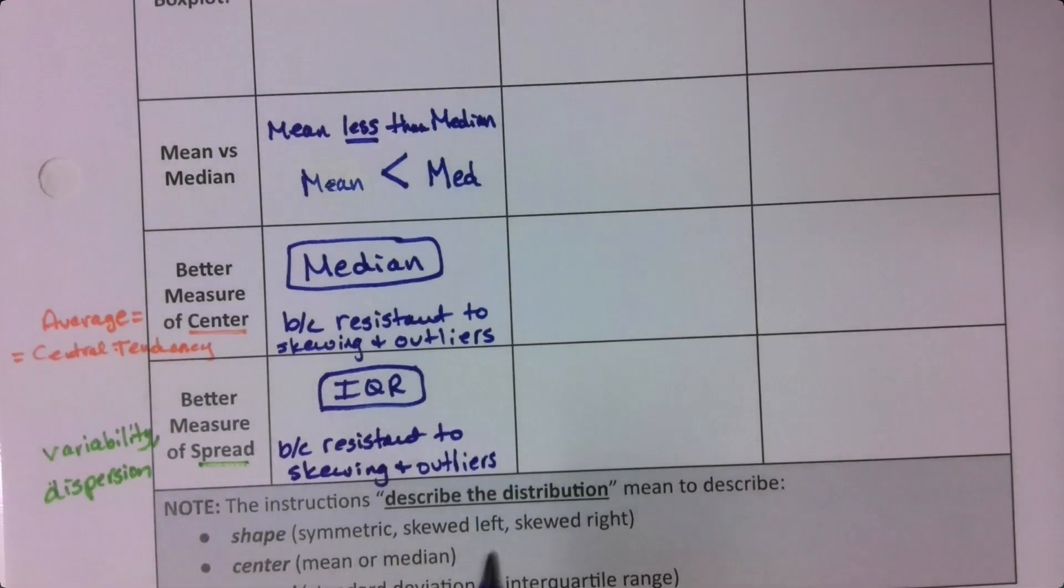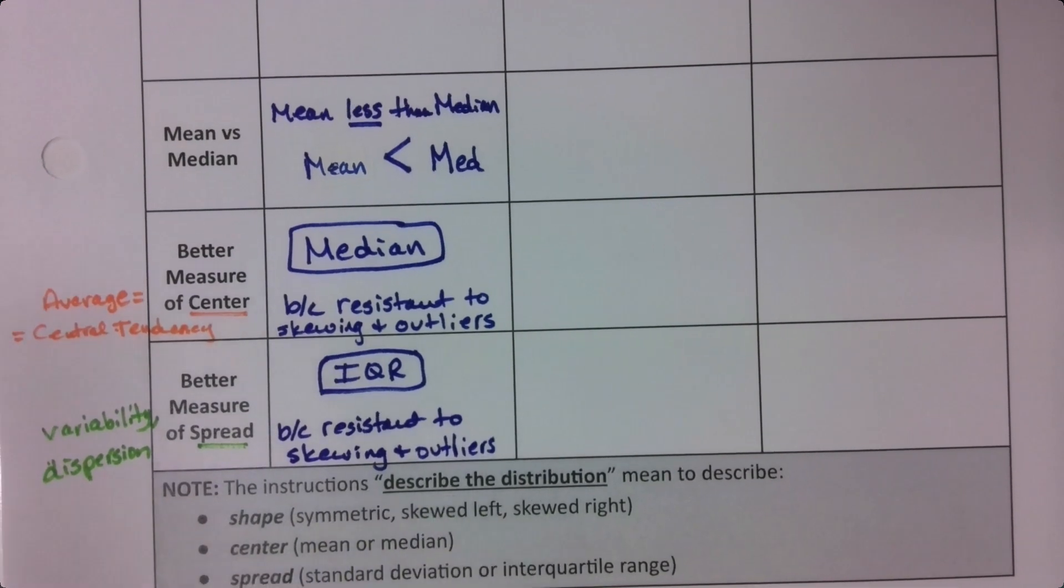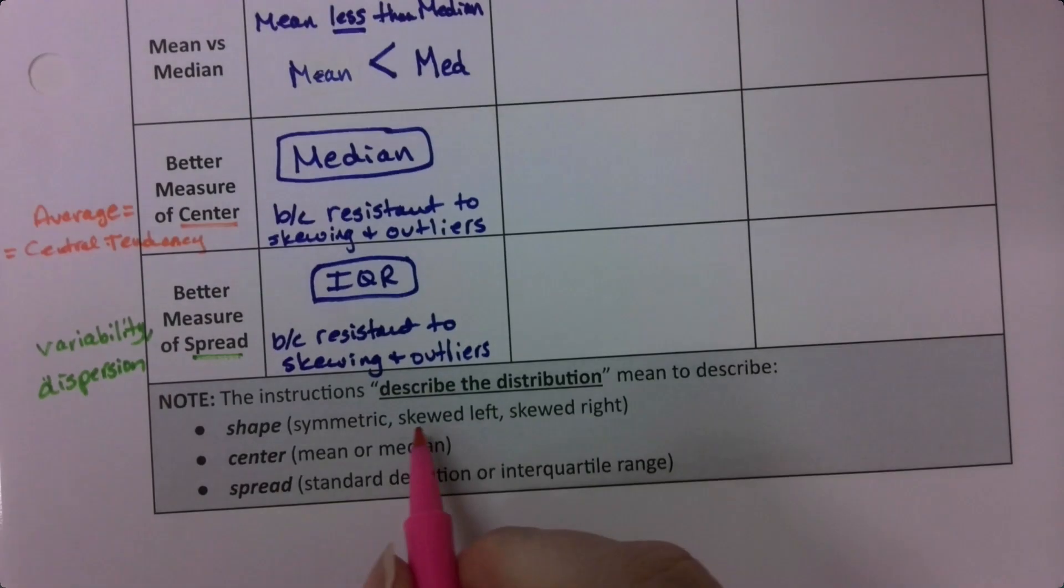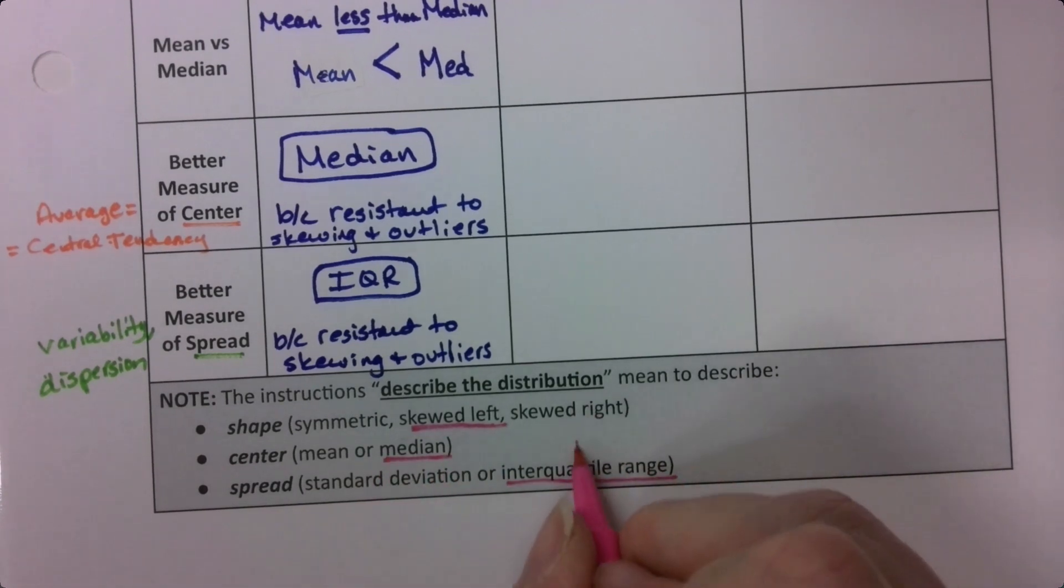So if a data set is skewed, you will take the median and the IQR. So if it's skewed left, if I look down here, if it's skewed left, I would take the median and the interquartile range. IQR.